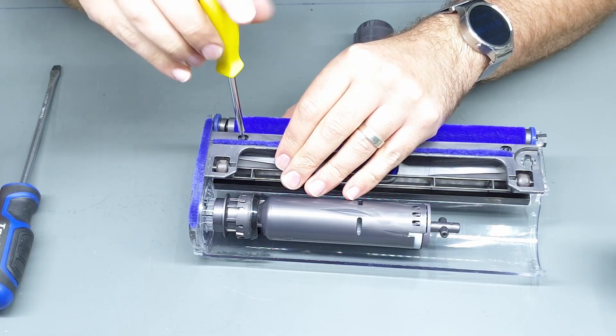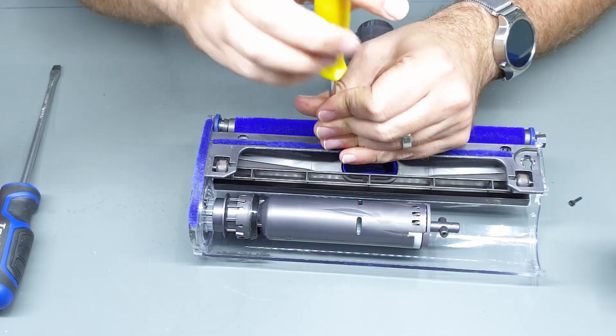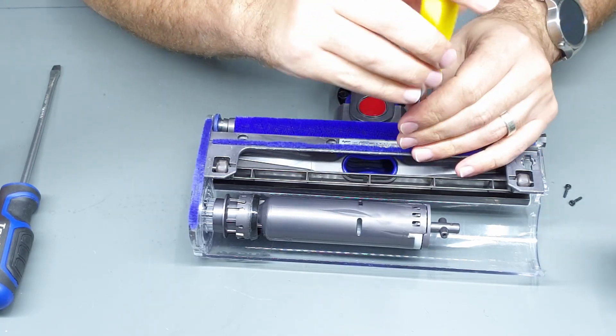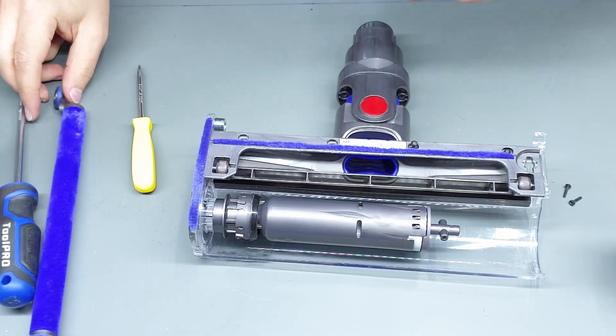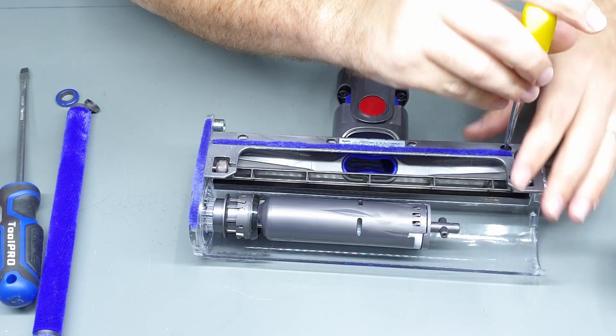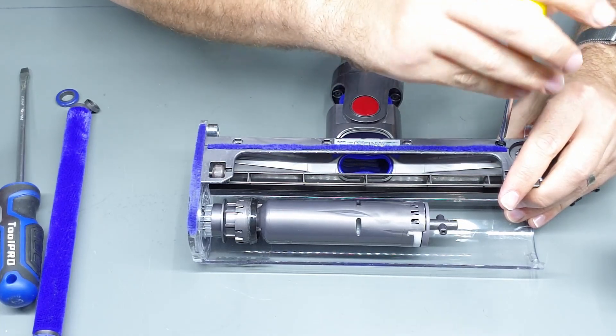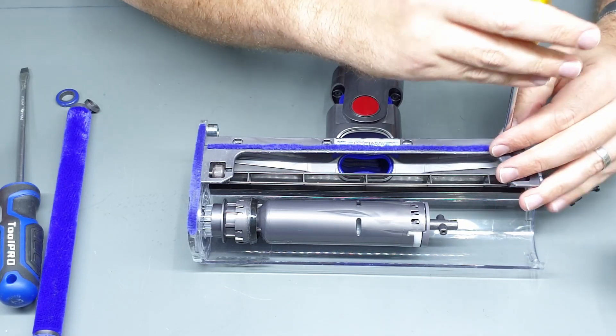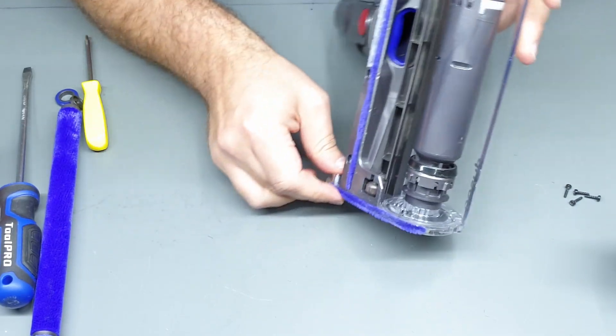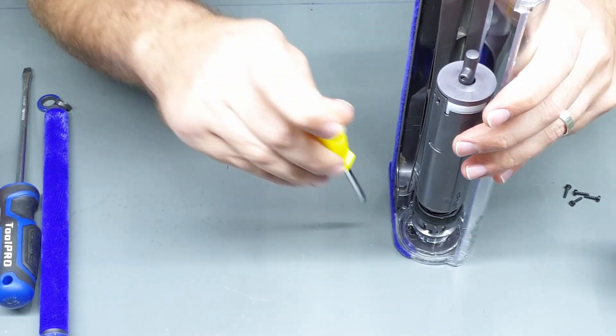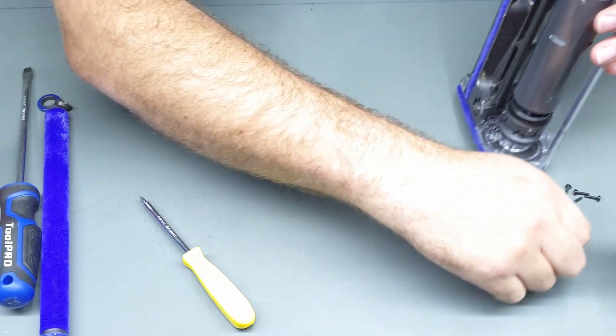And then we've got four torx screws along here that will need to come out. So this is a T8 screwdriver. You can also remove this as well, wash that. So now you'll see just here there's another torx bit that needs to come out as well, which is quite short.